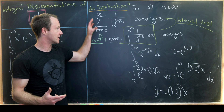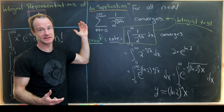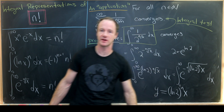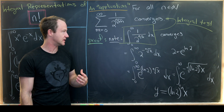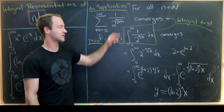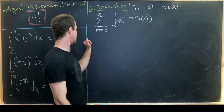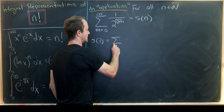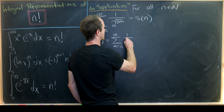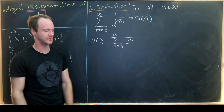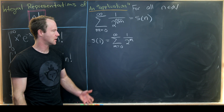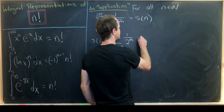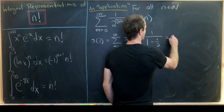To reiterate: we showed this series converges by the integral test, comparing with the integral of an appropriate function, which we showed converges using our earlier result. Now let's look at some values. Setting s of n equal to this series, s of one is the sum from m equals zero to infinity of one over two to the m — that's a geometric series with starting term one and common ratio one half, which sums to one over one minus one half, giving us two.